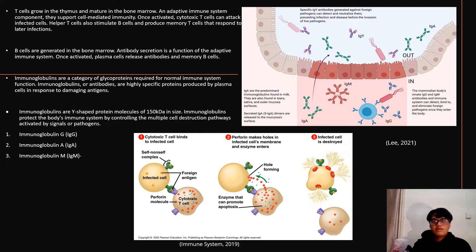Immunoglobulins are found on the surface of B cells and circulate freely in bodily fluids. When an antibody binds to a specific antigen, an antibody-antigen complex is formed, eliciting an immunological response. Immunoglobulins neutralize, opsonize, and activate a complement system to eliminate foreign invaders.